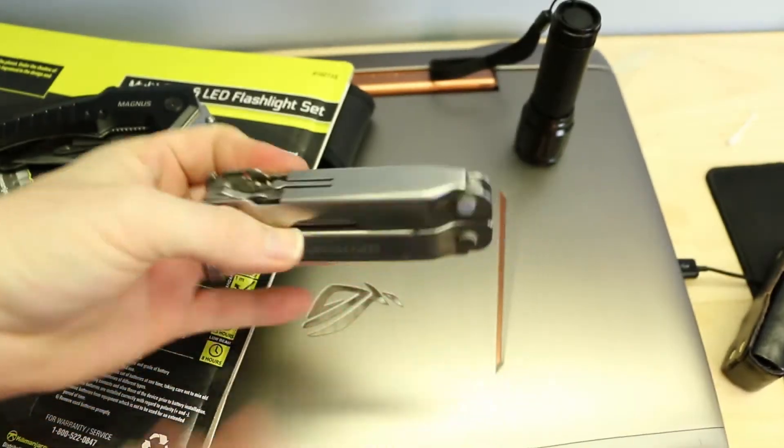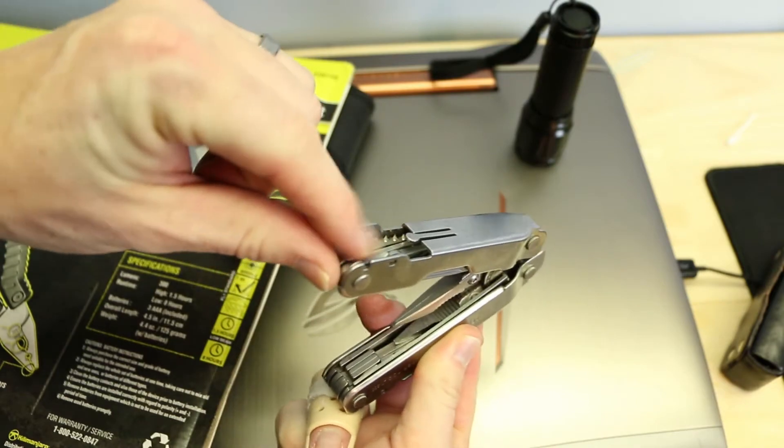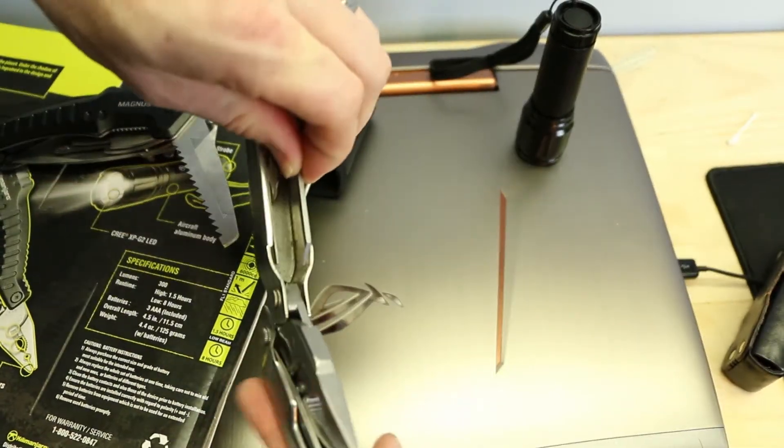And yeah, here's the Leatherman SuperTool 300. Yeah, I snapped the thing off of that. It's this little catch thing when I was sawing with it.